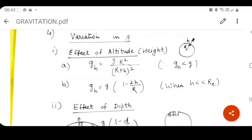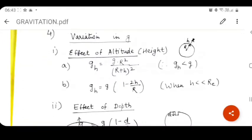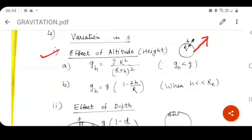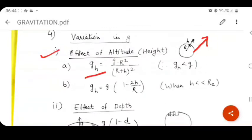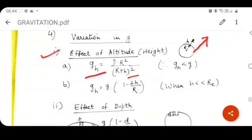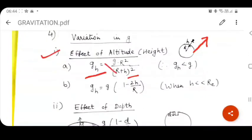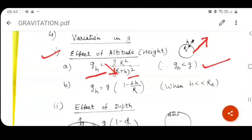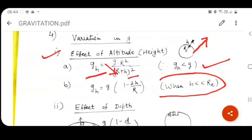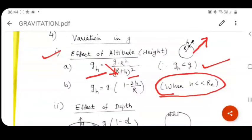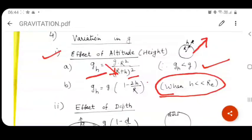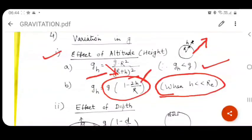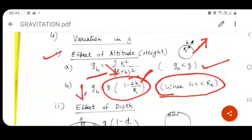Now we are taking various factors for the variation in small g. First is height. As we go on above the Earth surface, the value of small g decreases. If the height is too much, then gh is inversely proportional to R plus H whole square. Hence, gh is less than small g on the surface. But when height is very small as compared to the radius of Earth, then gh is equal to small g into 1 minus 2H upon R. As the height is increasing, insignificantly gh is decreasing.